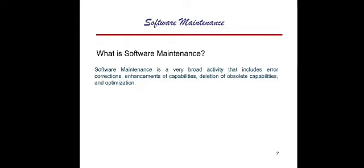In today's lecture we are going to discuss software maintenance. Software maintenance is generally categorized as a broad activity because it includes all different types of error correction methods and enhancing the software, deletion of obsolete capabilities, and optimization. Generally, software maintenance is applied whenever the software is complete and it goes into the hands of the user.